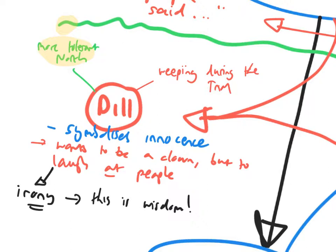And one of the final things that Dill says in the novel is that in the future he wants to be a clown, but a different kind of clown. He is just going to stand there and laugh at people. Now, ironically, this is wisdom. Dill is the one who actually sees society and prejudice and all the bad things for how absurd they truly are. Yet we associate innocence with childishness, with unknowing. How ironic, then, that the most innocent character is the one who sometimes demonstrates the greatest wisdom.